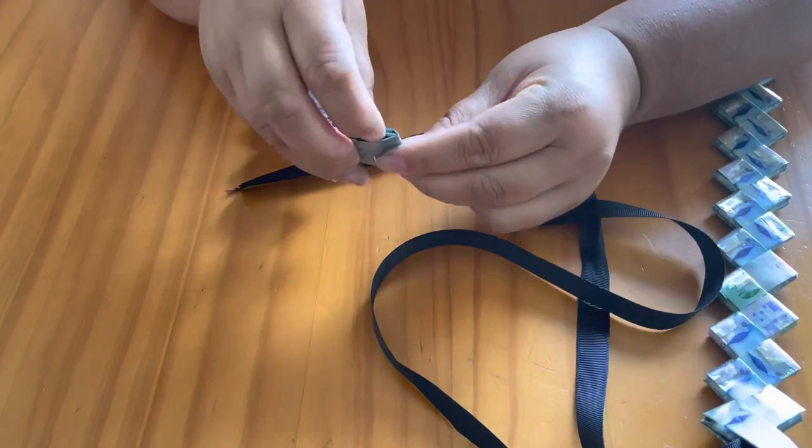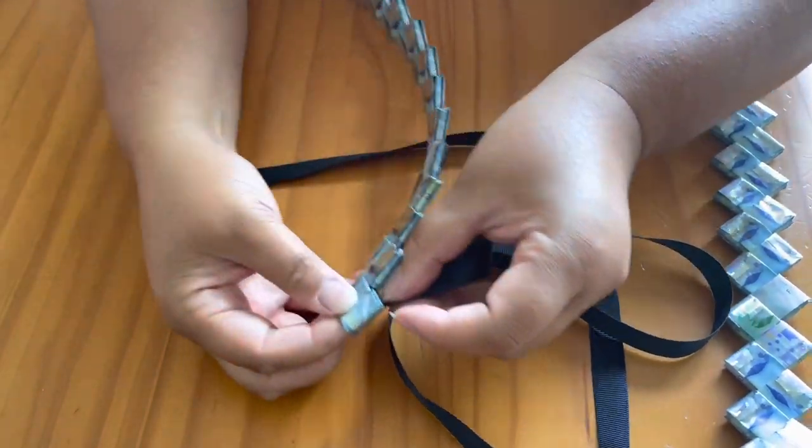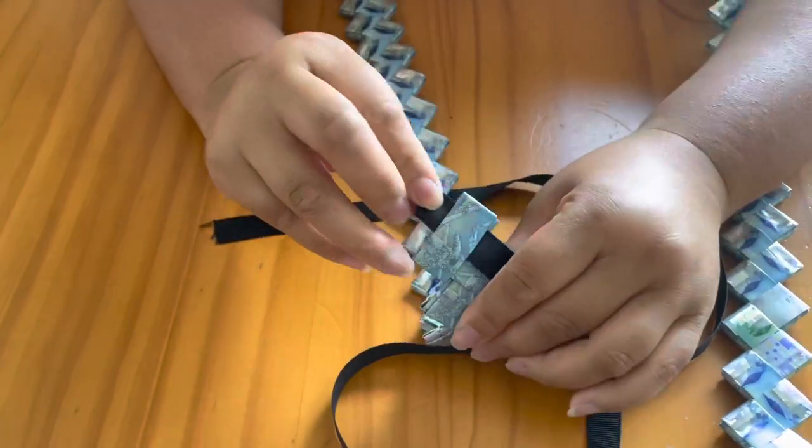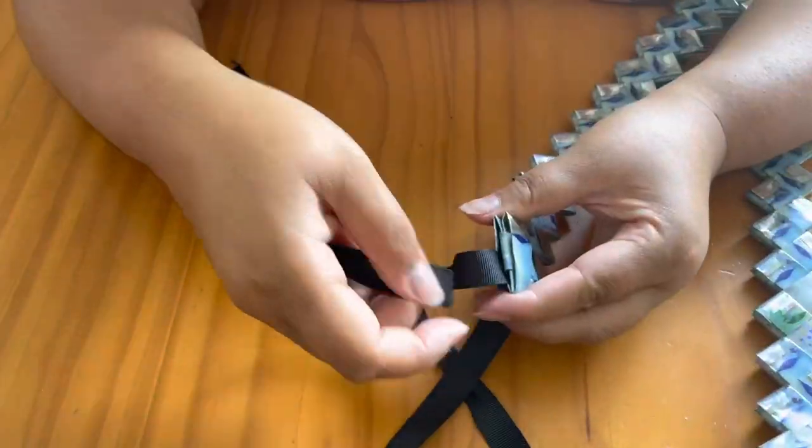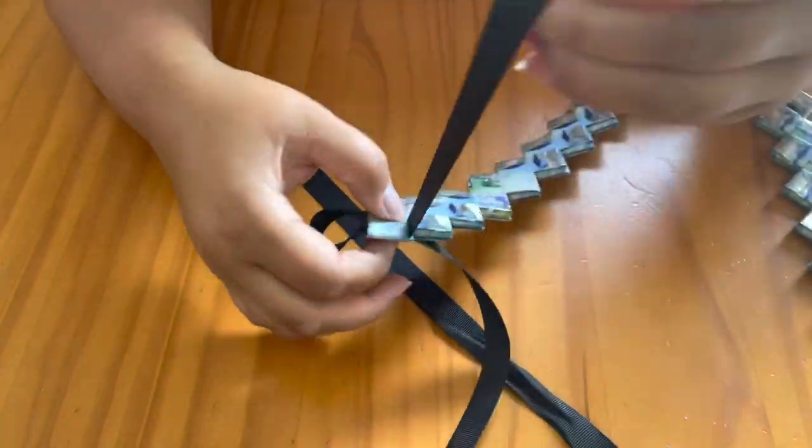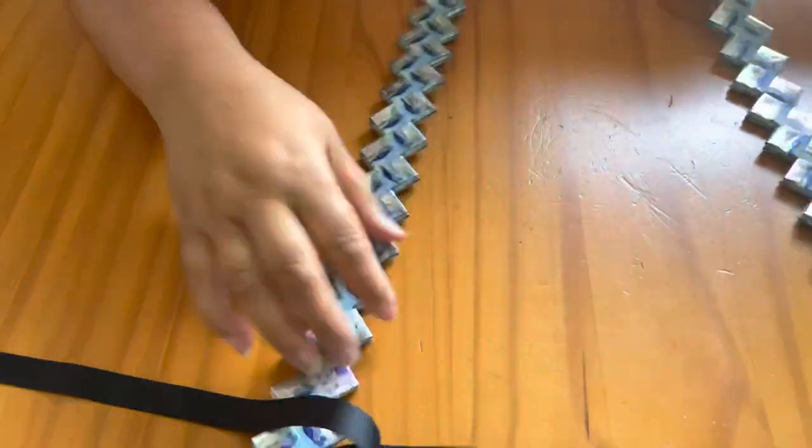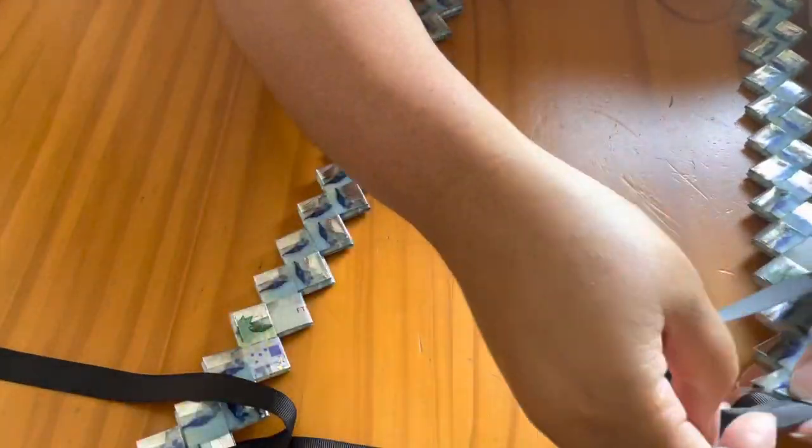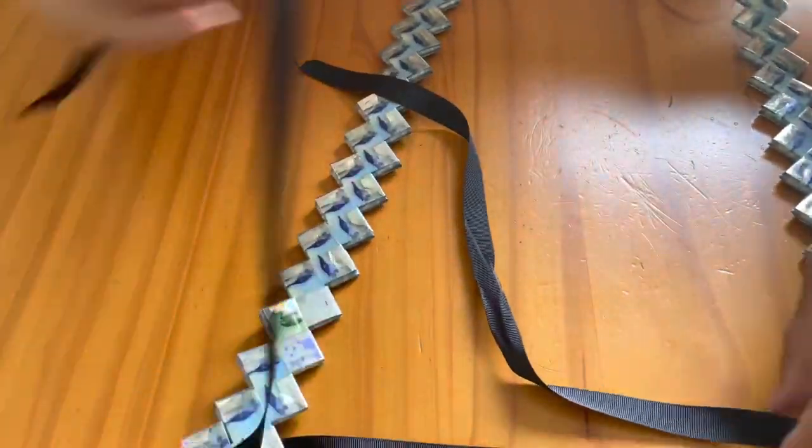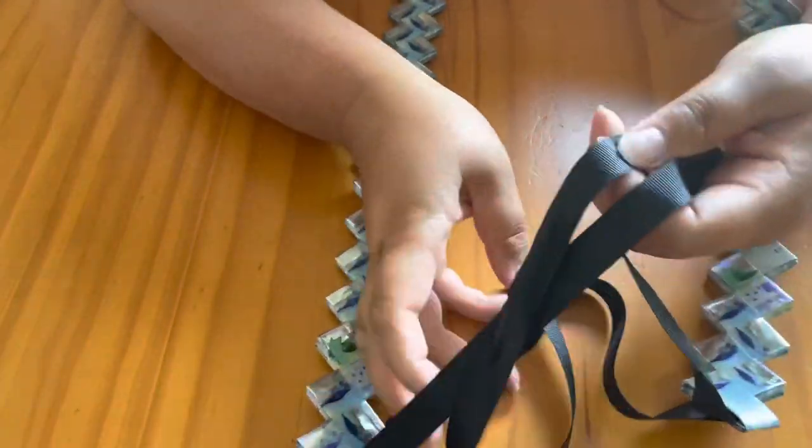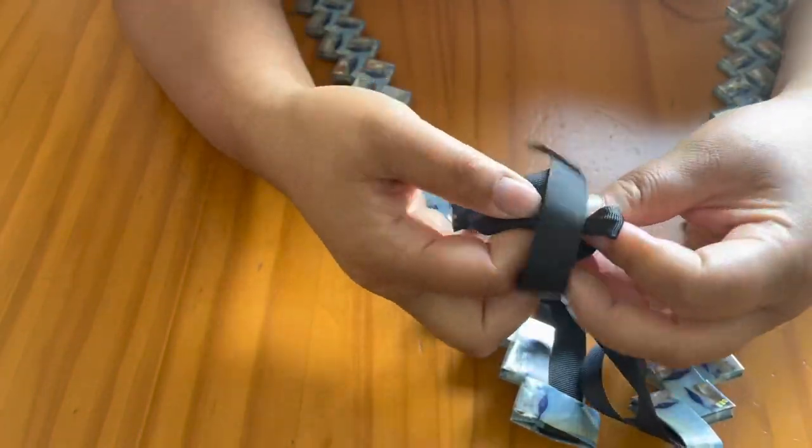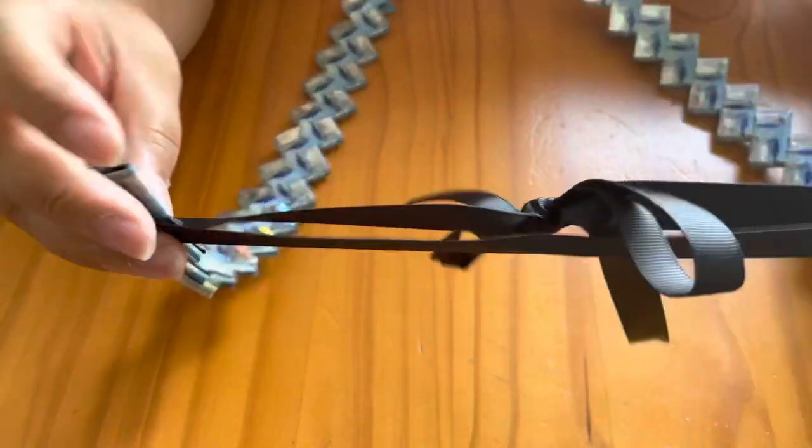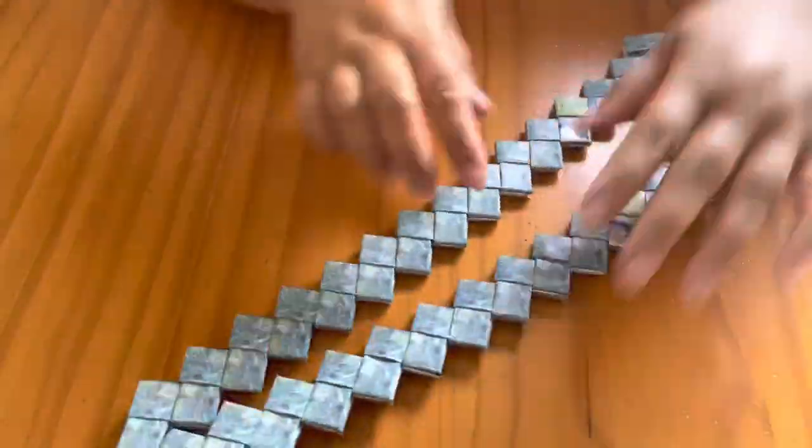And I'm going to take the other side and put it in here. Move it through, wrap it around, put it in again. Just like that. And that way you could tie these two right here in the middle. And this is the part that will go around the neck. Just like that. And there you have it, a flat money lei.